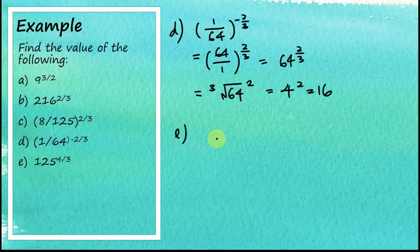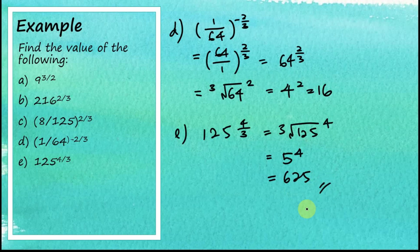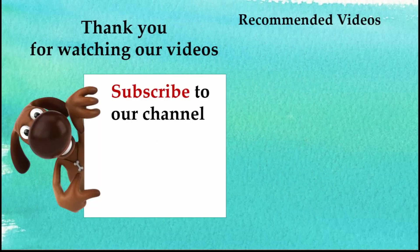Last one: 125 to the power of 4 over 3. The denominator is 3, so this is the cube root of 125 to the power of 4. The cube root of 125 is 5, so this is 5 to the power of 4. Using your calculator, you should be able to find that the answer is 625.